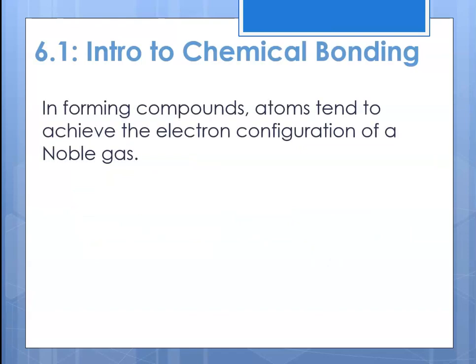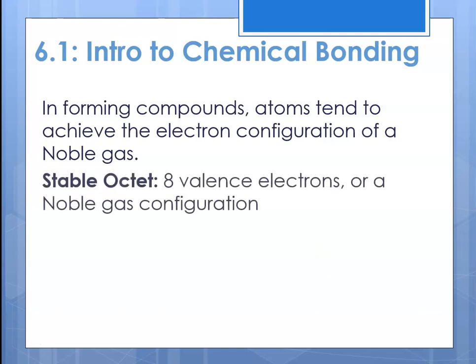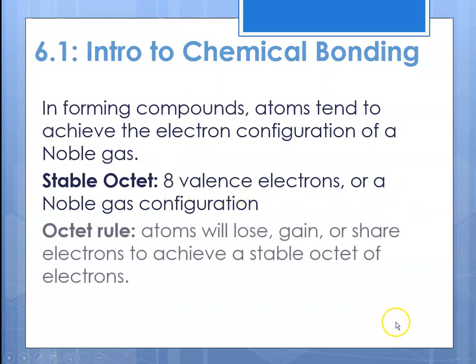In forming compounds, atoms tend to try to achieve the electron configuration of a noble gas. Noble gases have a full S and P sublevel. The S sublevel holds two electrons and the P holds six — two plus six is eight, and eight is great. So in order to get to a noble gas configuration, elements try to get eight valence electrons. We call this the octet rule: atoms will lose, gain, or share electrons in order to achieve a stable octet of electrons.